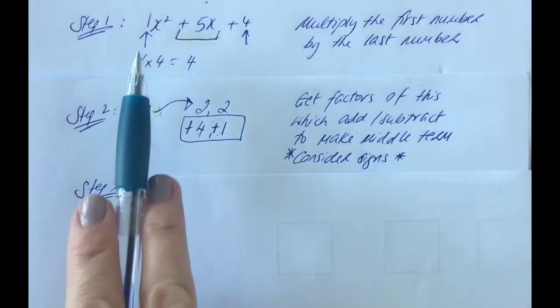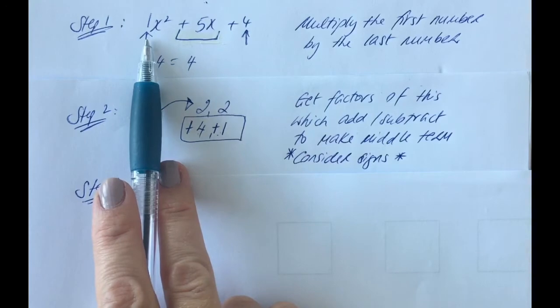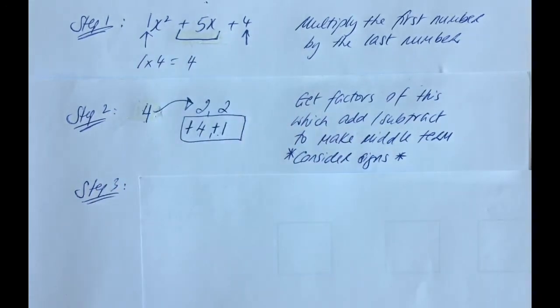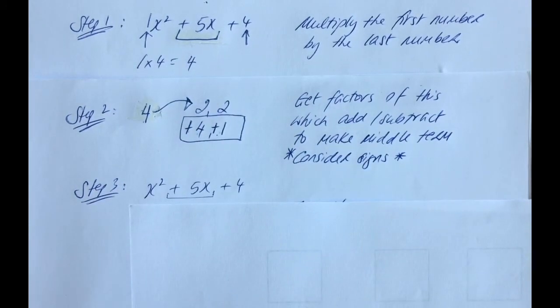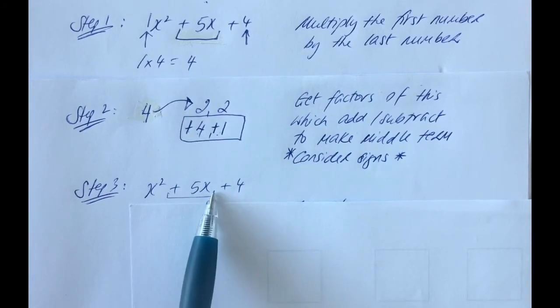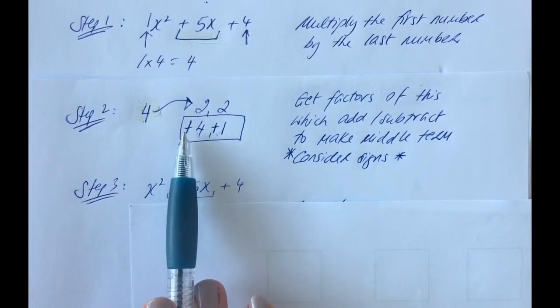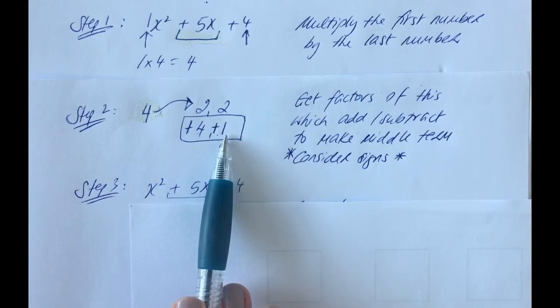Okay, and so in step 3, we're going to rewrite our quadratic. And our quadratic, in this case, is x squared plus 5x plus 4. So what we're going to do is we're going to rewrite it. Instead of the middle term 5x, we're going to write it as a plus 4x plus 1x.